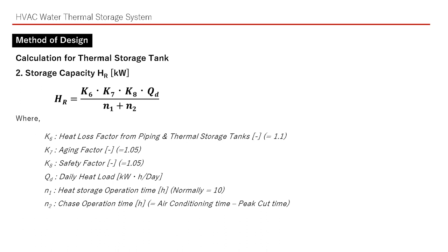Next is the storage capacity HR. We can calculate it from this formula. K6, K7, K8 are the factors for each. Qt is the daily heat load. N1 is the heat storage operation time — normally it is 10 hours. N2 is the chase operation time. If the chase operation time is short, the thermal storage tank will be bigger.